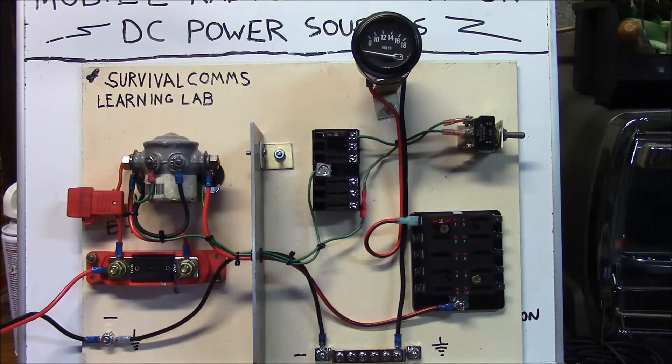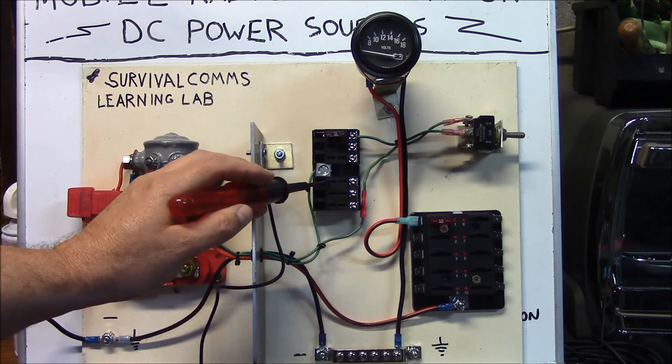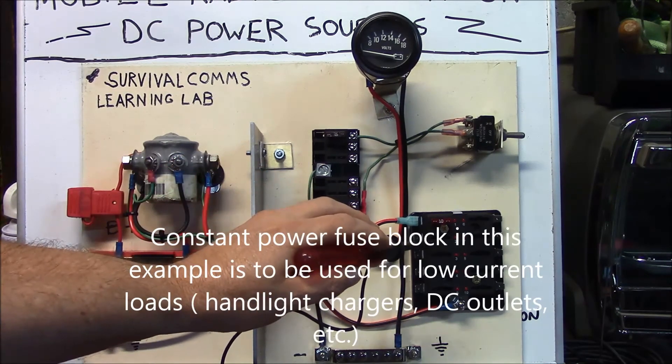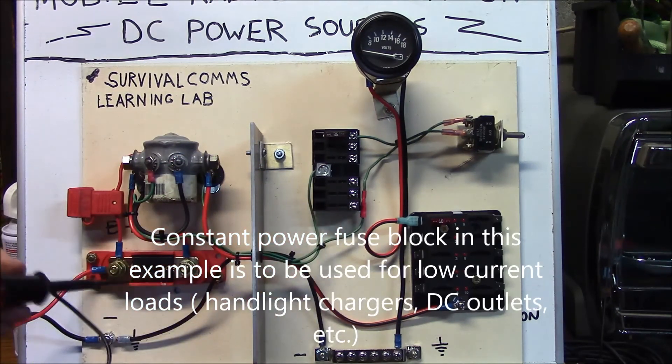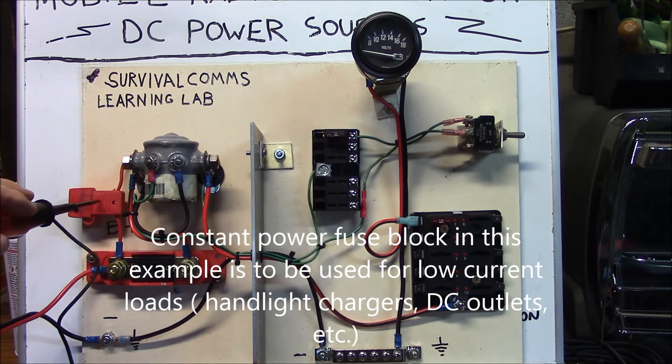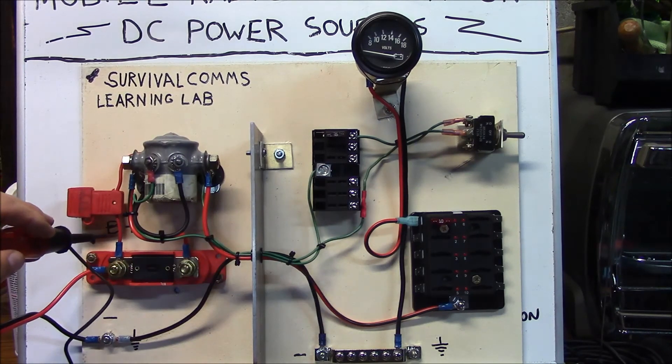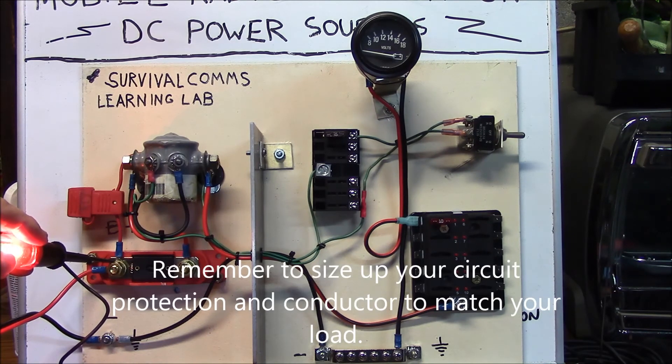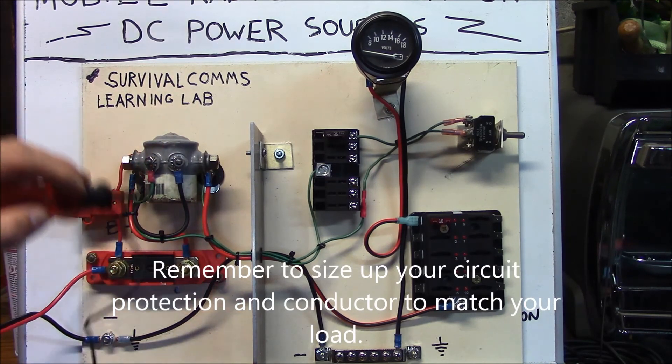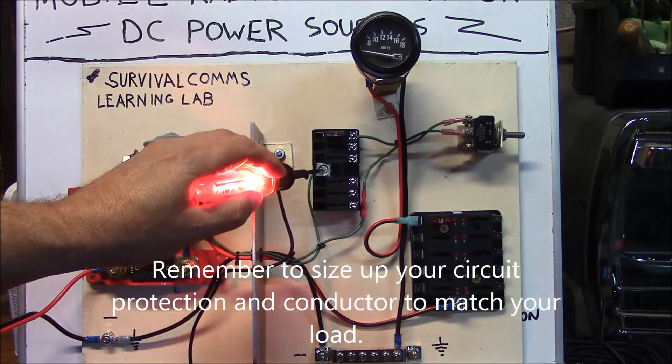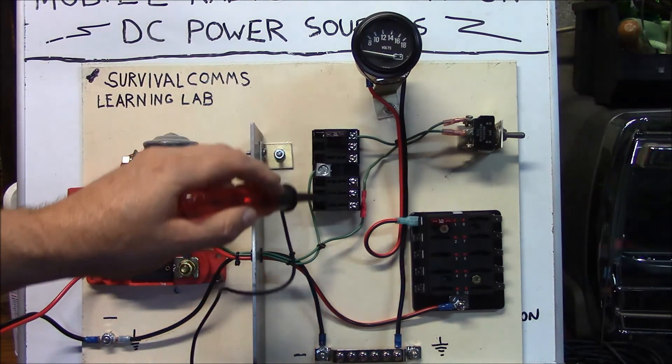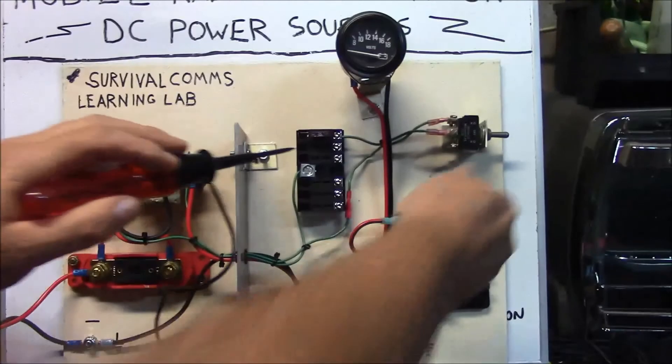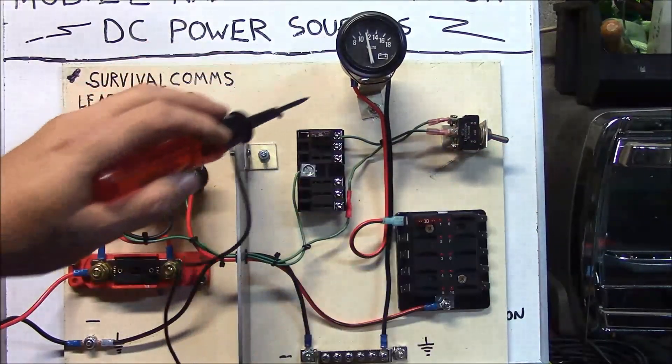This model represents a combination system which has a constant power fuse block and your switched power fuse block. Now, your constant power side is fed by a fuse. It's fed off of your source side of your master fuse and then provides power to the internal fuse block. And this fuse block here is generally used to drive your relay.